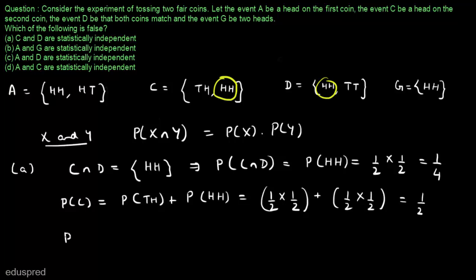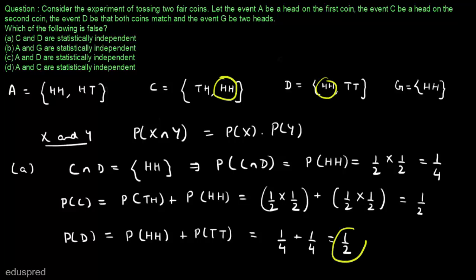Similarly, P(D) = P(HH) + P(TT) = 1/4 + 1/4 = 1/2. Now let's see if C and D are statistically independent. P(D) × P(C) = 1/2 × 1/2 = 1/4, which is indeed equal to P(C ∩ D) = 1/4. So this statement is true.